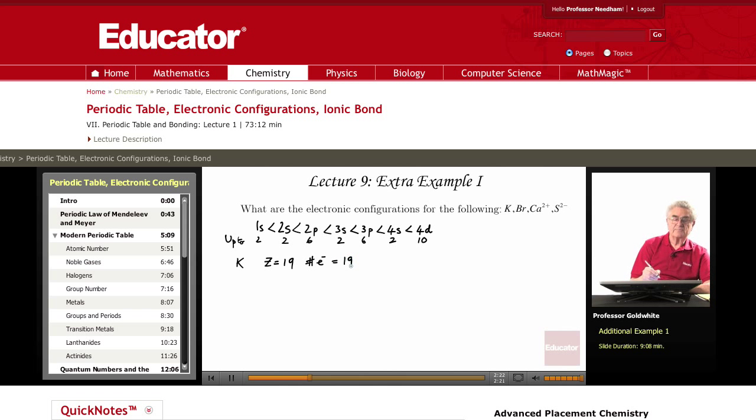So we simply start filling the orbitals in order of increasing energy, putting as many electrons as possible in those orbitals until we have reached the number 19. And we see that that is 1s2, 2s2, 2p6, so far we have 10 electrons, 3s2, 3p6, so far we have 18 electrons.